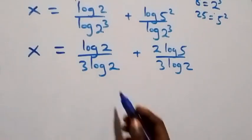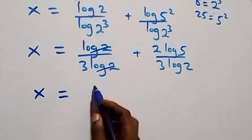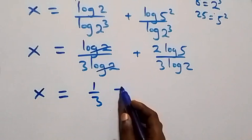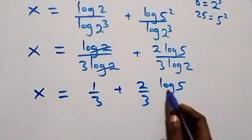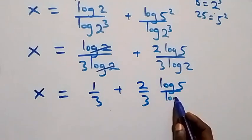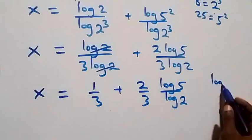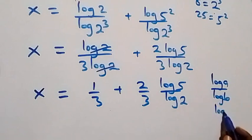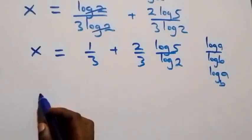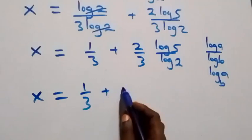From here, log 2 cancels with each other and we have 1 over 3 left. So x now equals to 1 over 3, plus 2 over 3 times log 5 over log 2. We also apply change of base: log a over log b is the same as log a to base b. So what we have becomes x equals to 1 over 3 plus 2 over 3 times log 5 to base 2.